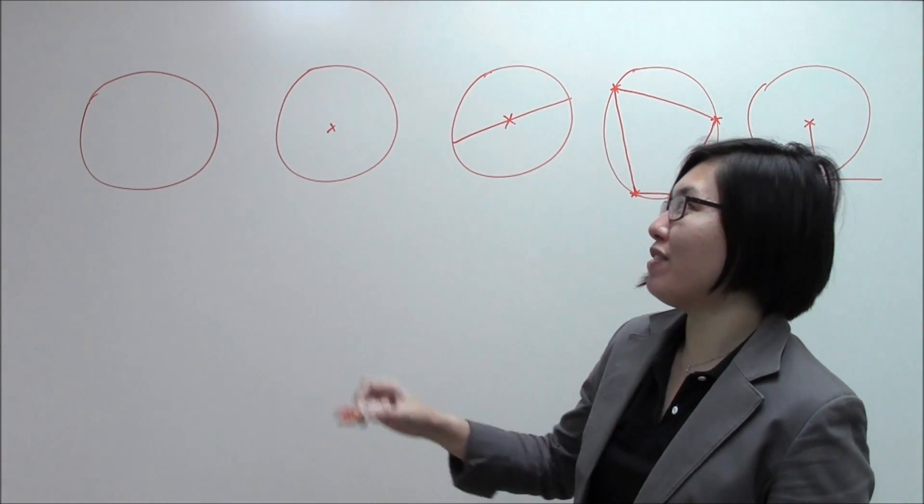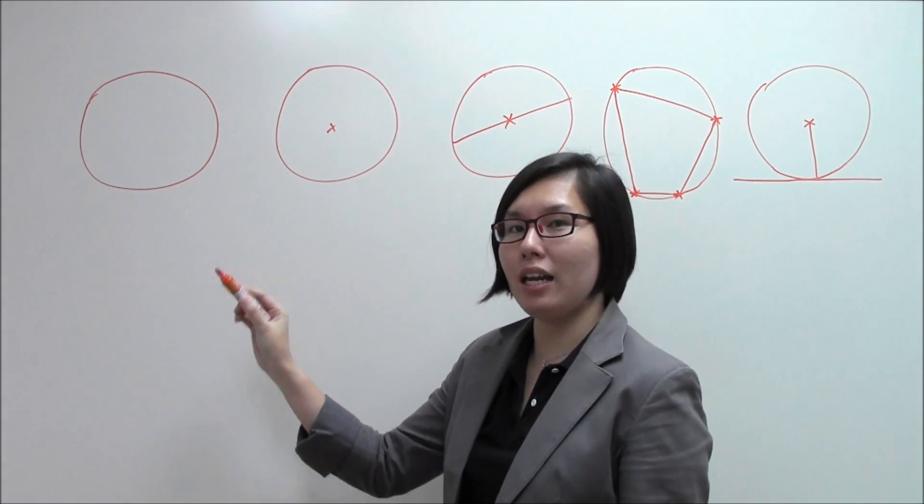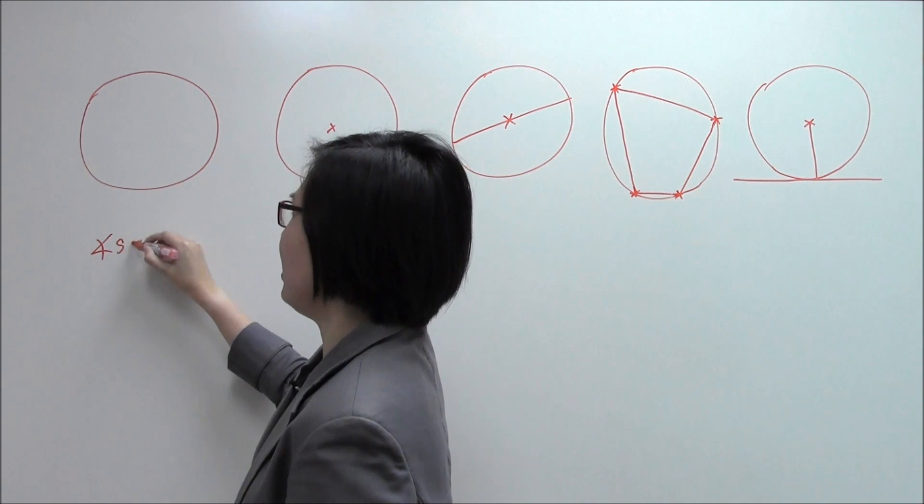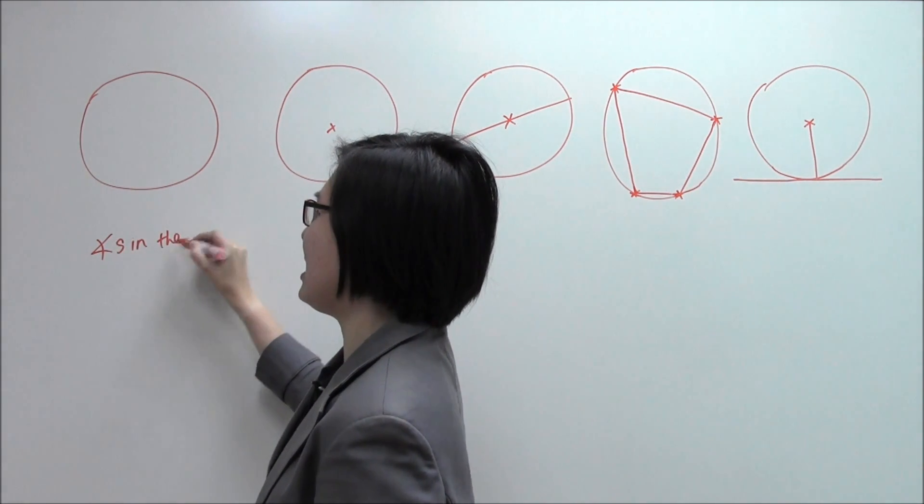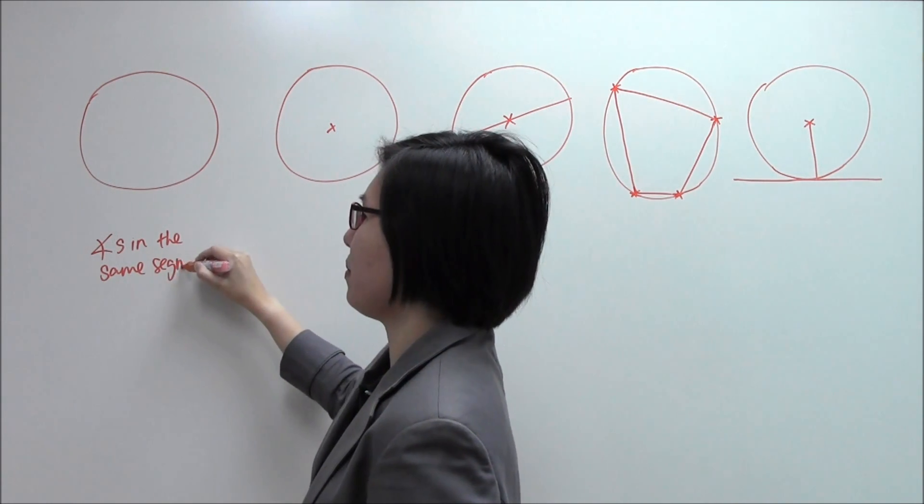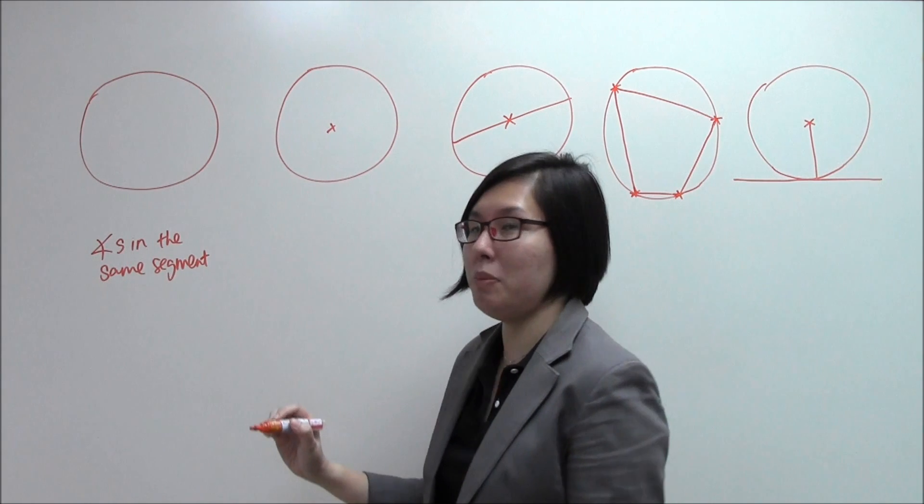I have used my favourite colour orange to draw for you 5 circles over here. And the first property that I'd like to share with you is called angles in the same segment. I'm going to draw for you what do we mean by that.